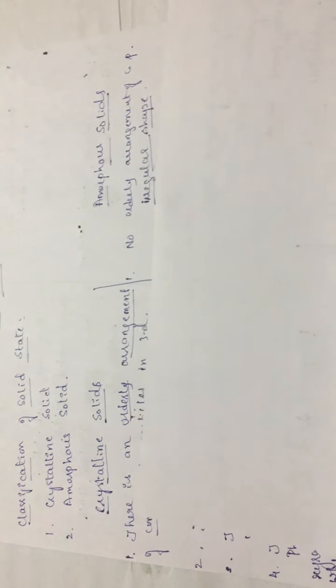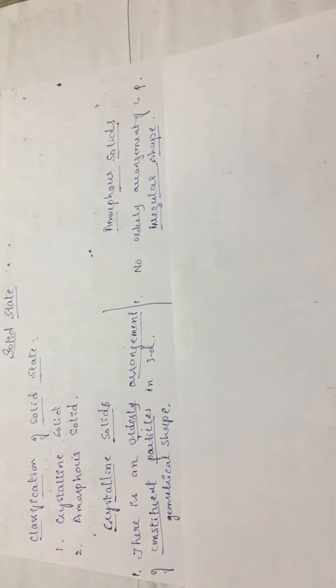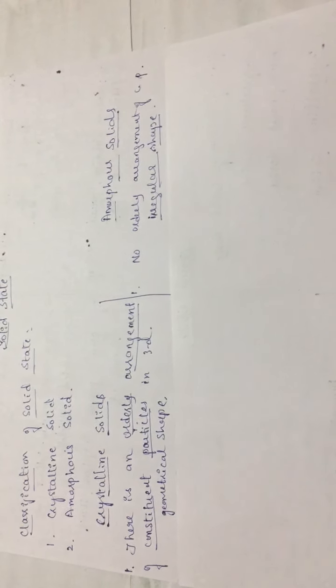Now let's see the differences between these two solids — crystalline solid and amorphous solid. In crystalline solids, there is an orderly arrangement of constituent particles in a three-dimensional shape, whereas in amorphous solids there is no orderly arrangement of constituent particles, hence they give an irregular shape. This is the main difference between these two solids.